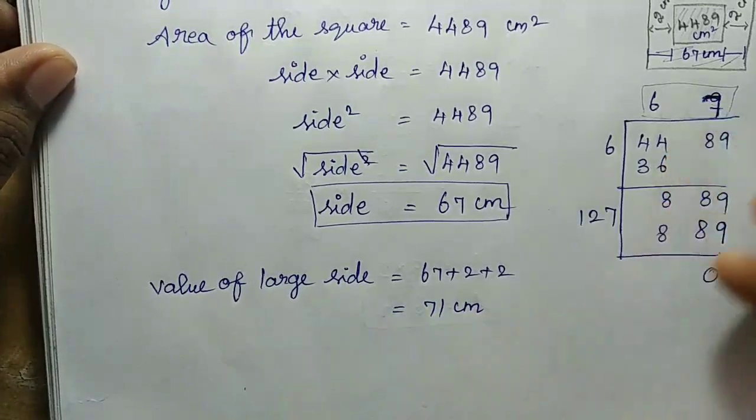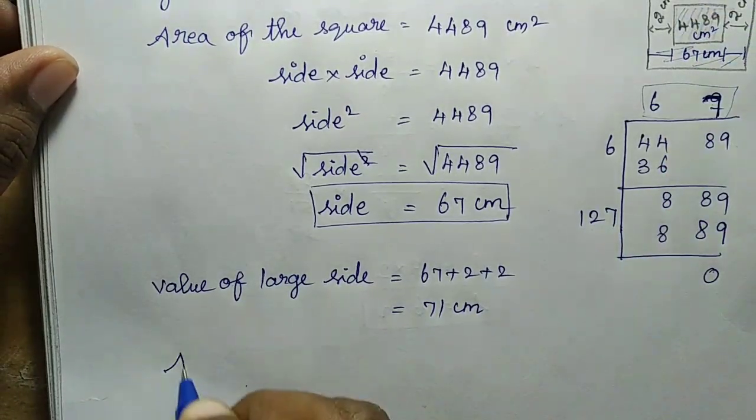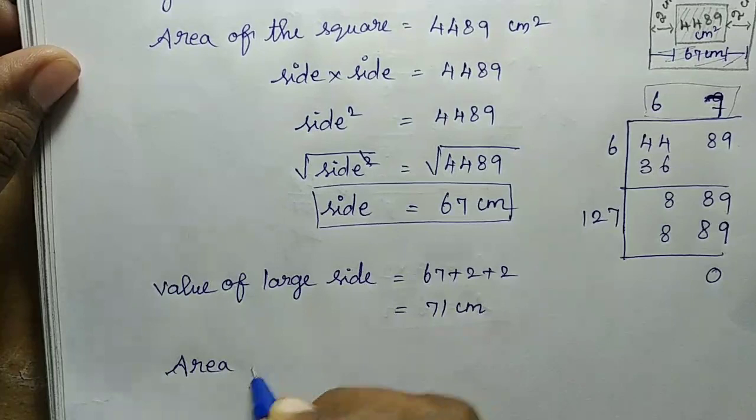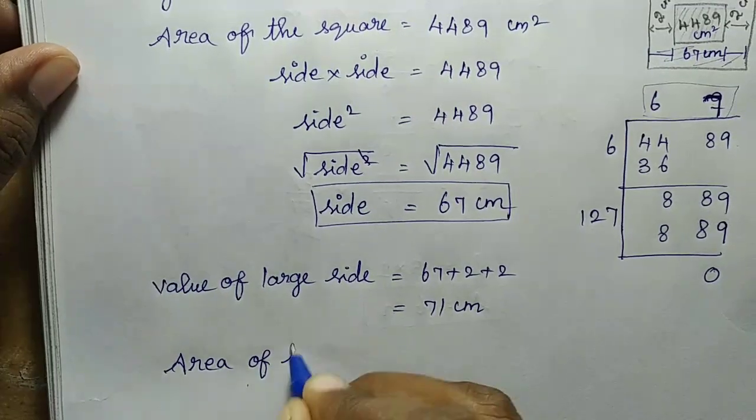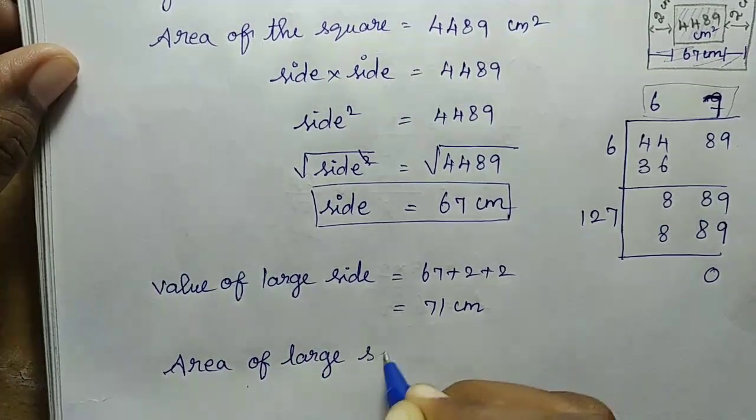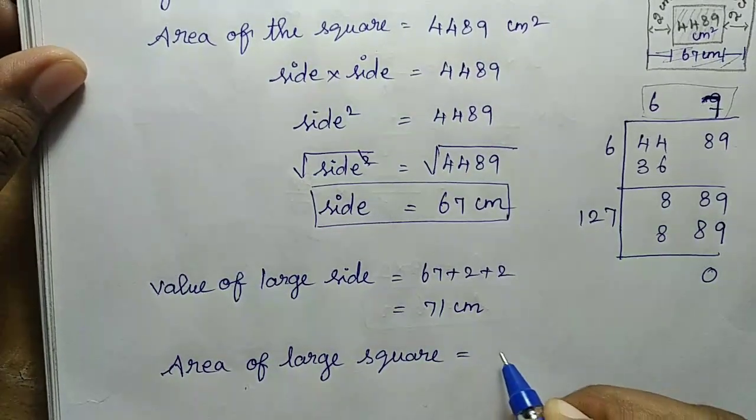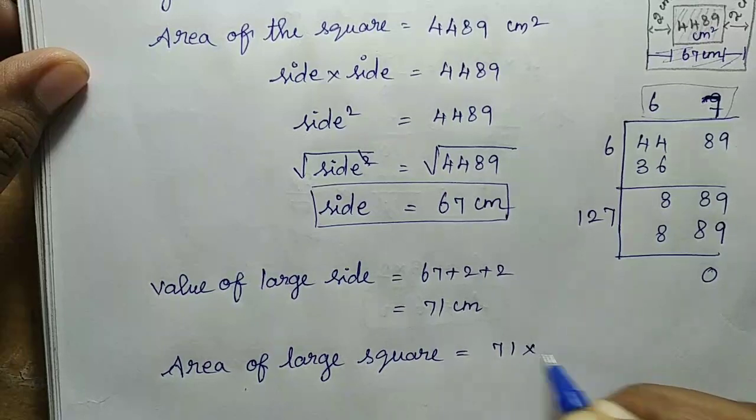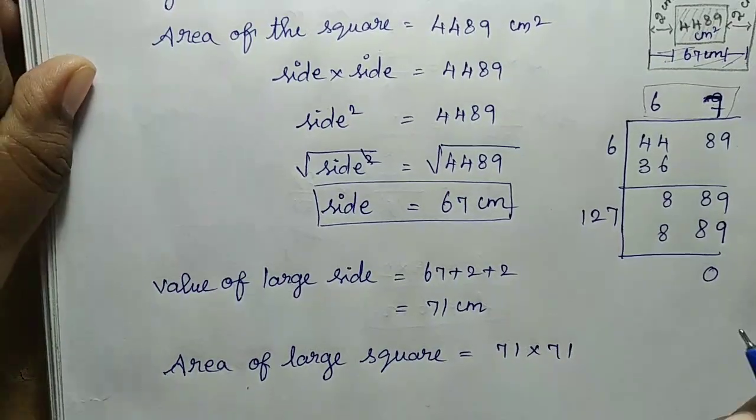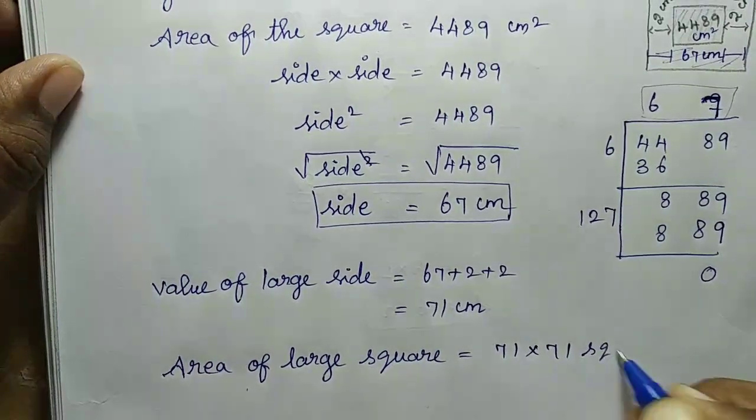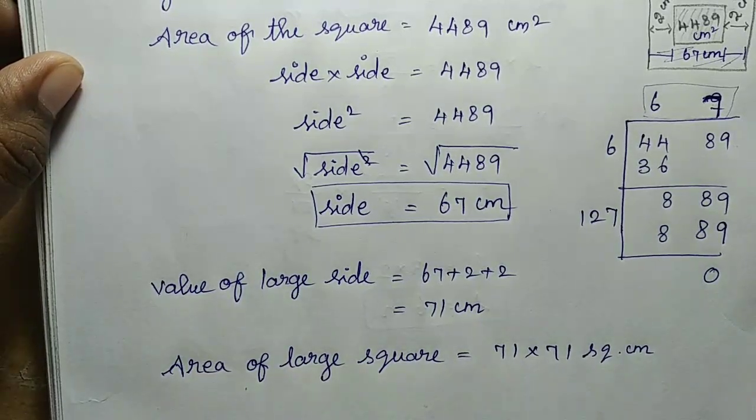Now the total area. Area of large square: side into side, so 71 into 71 square cm.